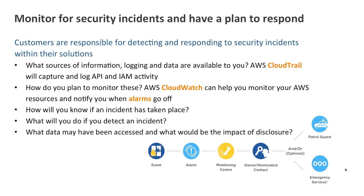Let's talk about monitoring for security incidents and how you should have a plan to respond. Within EC2, you are responsible for detecting and responding to security incidents, because they're likely to have happened because of your application and your configuration. Think about what sources of information you can get from your Amazon environment — logging data, Amazon CloudTrail, what our APIs can tell you, and what logs from various Amazon services can tell you. How are you going to monitor that information? What events will trigger alarms? How will you know if an incident has taken place?